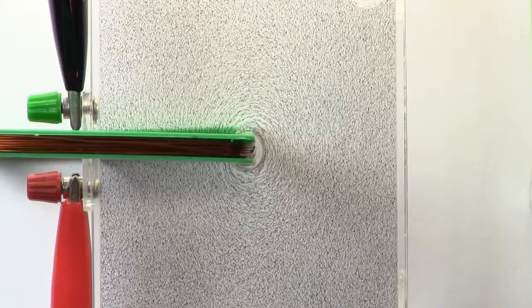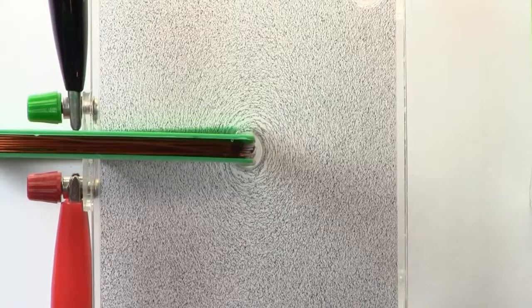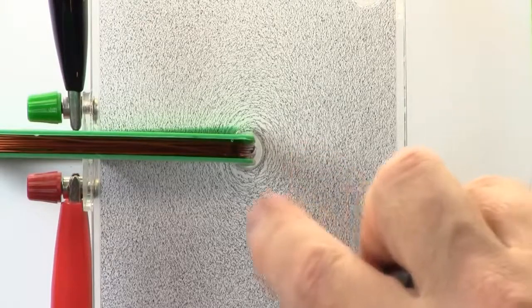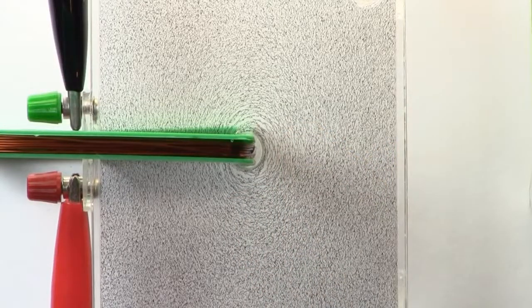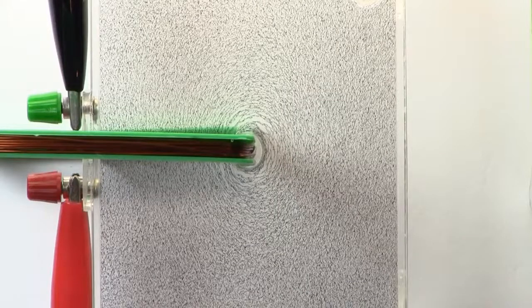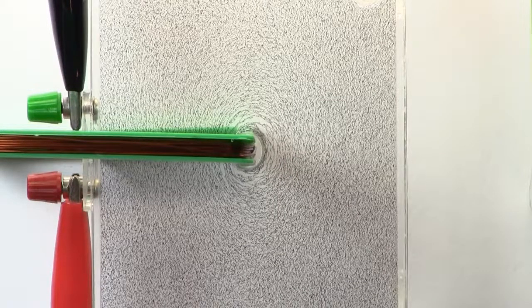So we can see something happened there. We're starting to get the iron powder starting to form circles around that wire. So down again for a little bit.